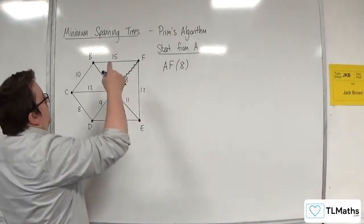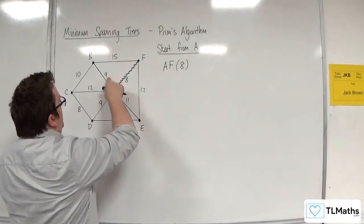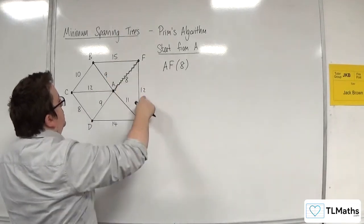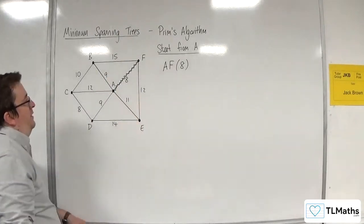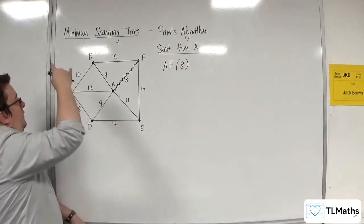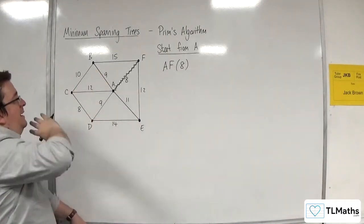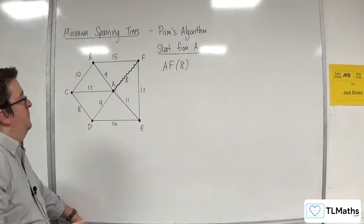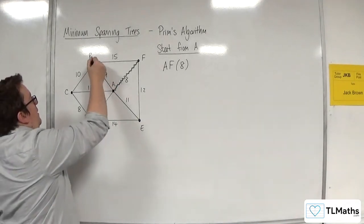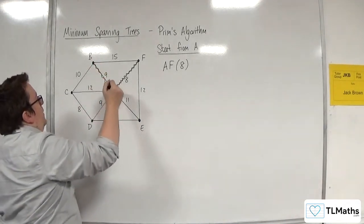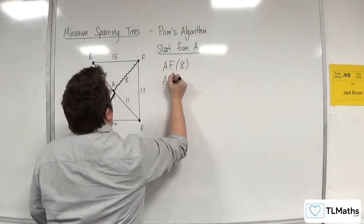So we've got 9, 12, 9, 15, 12, and 11 to consider. So it's either this 9 or this 9, and it doesn't matter which one I pick. So I'm going to go with this 9 here. So A, B with 9.